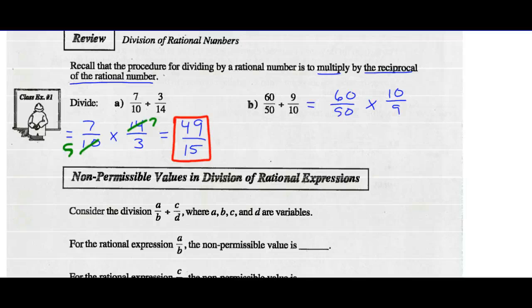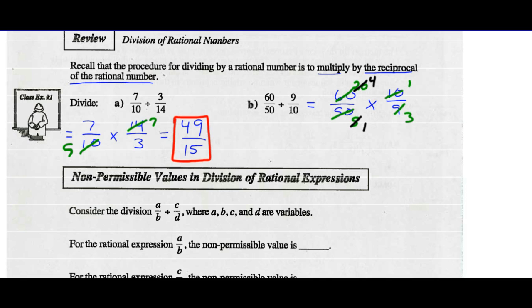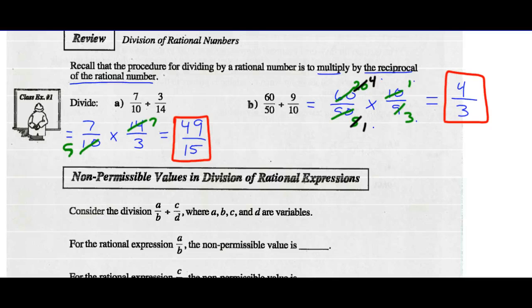Now we can reduce any numerator with any denominator. So 50 and 10 are both divisible by 10. And 60 and 9 are both divisible by 3. I also notice that 20 and 5 are both divisible by 5. So I keep going with simplification until I can't find any other common factors. Now I've got 4 times 1 in my numerator over 1 times 3 in my denominator. So 4 thirds is the simplest form — an improper fraction, but in lowest terms.